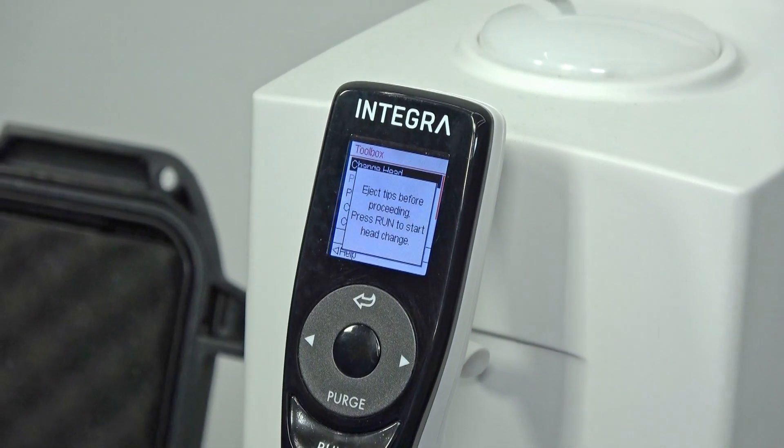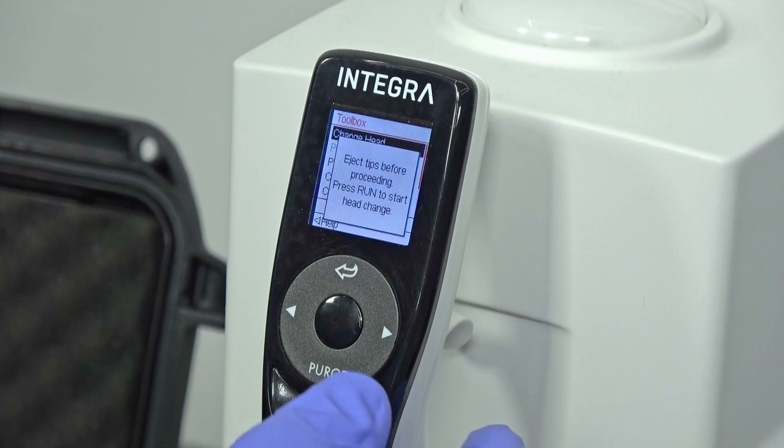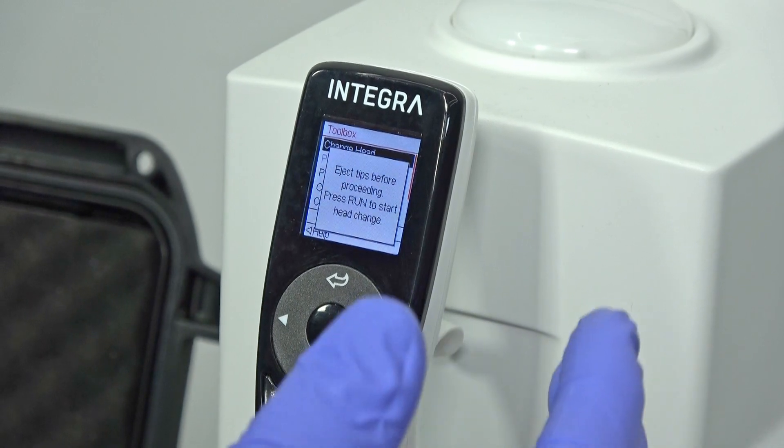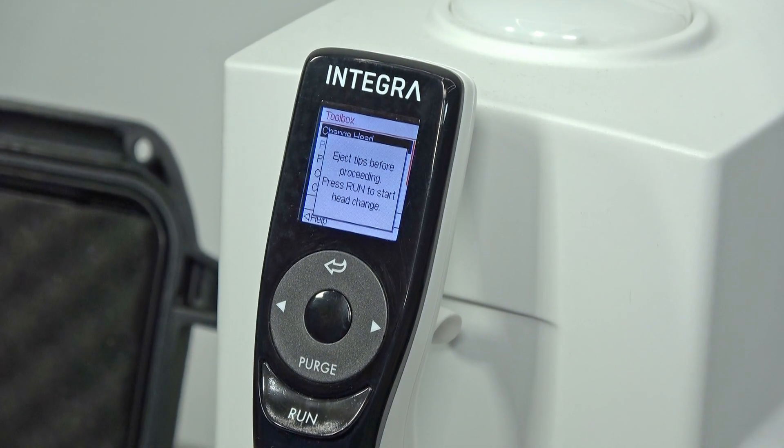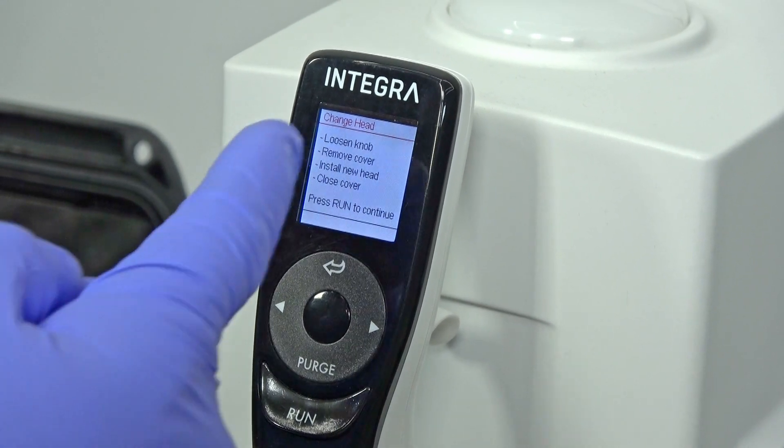Then push run. It says eject tips, there's no tips on it but we don't have any head. Then push run and it'll initiate positioning for a head change or head installation. So there we go, it says loosen knob, remove cover, install new head, and then close cover.